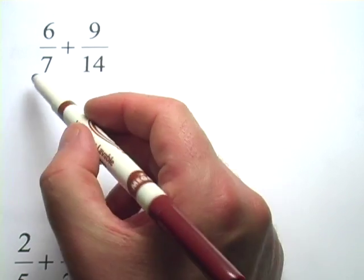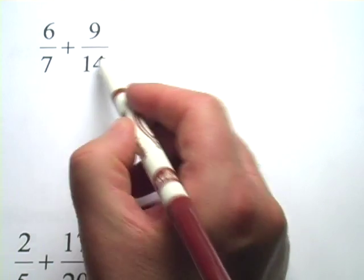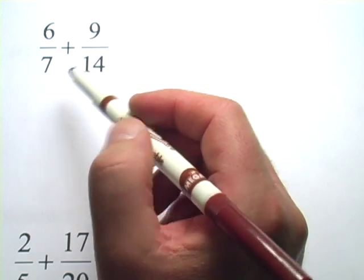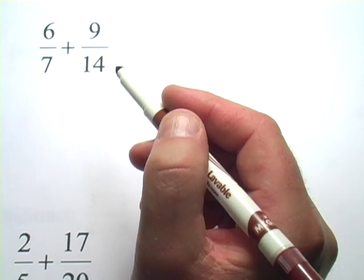In these problems we're being asked to add fractions that do not have common denominators. They don't have the same number on the bottom. So we've got to change one or more of these fractions so that they do have common denominators, and then we're going to add them together.